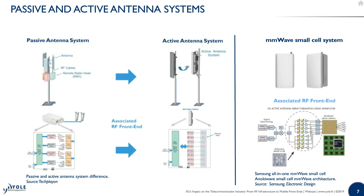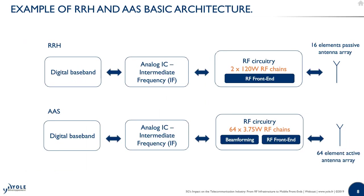Looking deeper at the architecture: comparing macro systems and low-density small cells, formerly you had remote radio heads and now you find active antenna systems. The first difference is that power levels are way lower. Two RF chains radiating 120 watts at amplifier level are now replaced by a system with 64 RF chains radiating 3.75 watts at amplifier level.